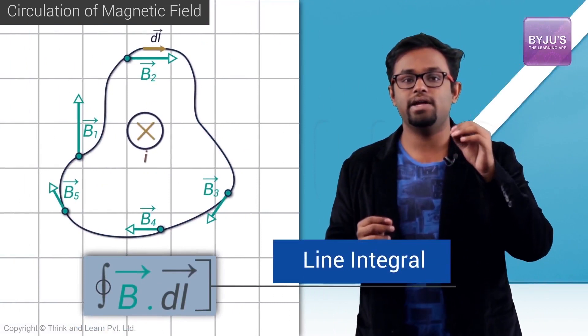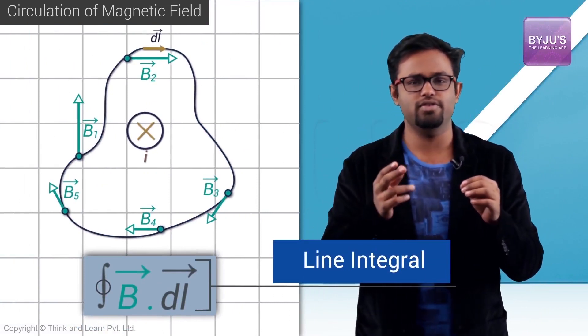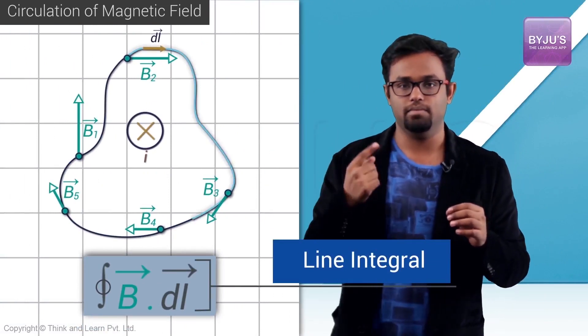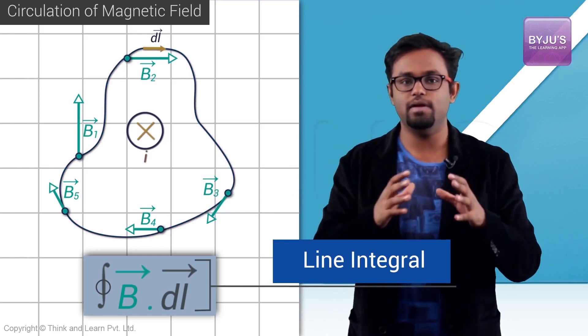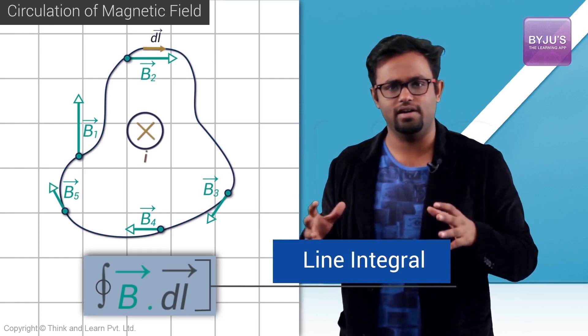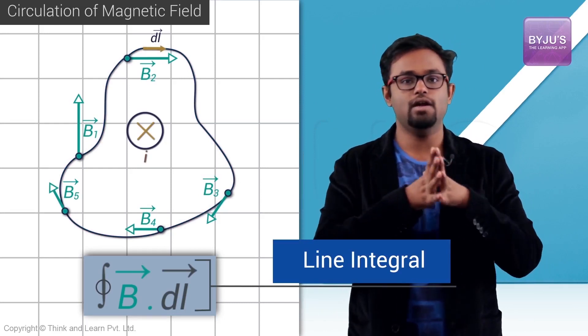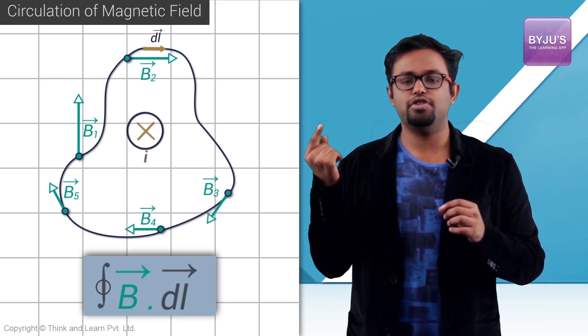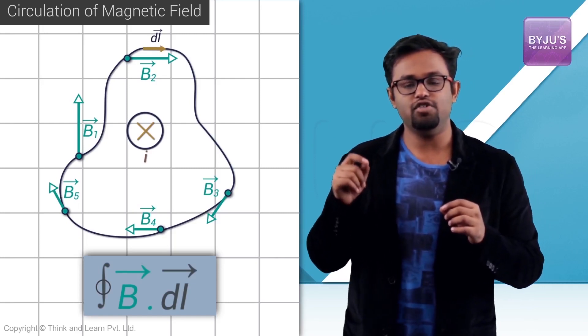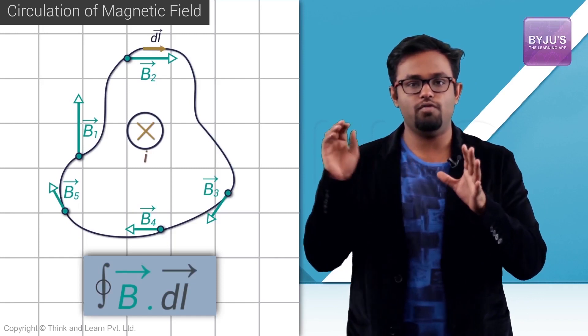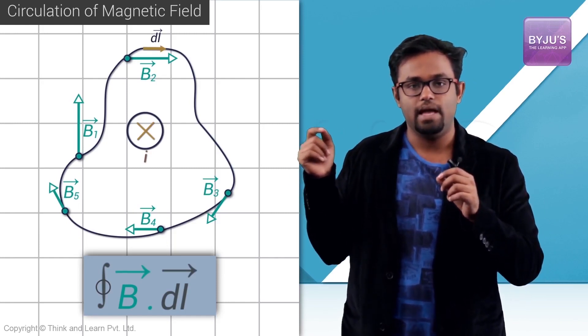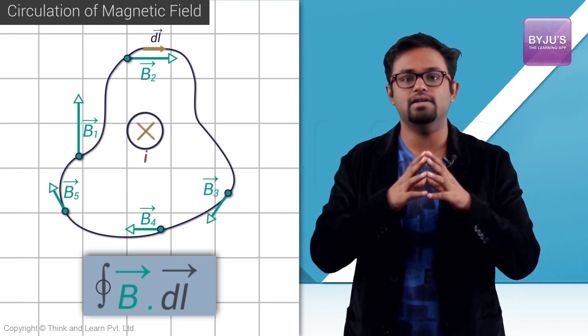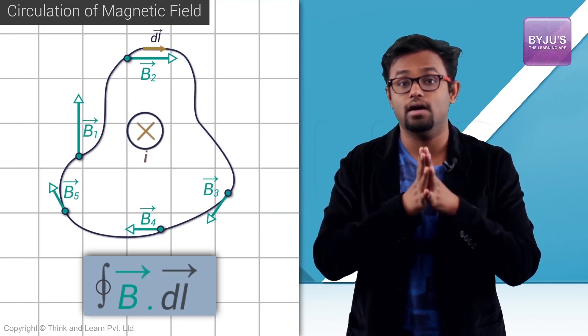This is a line integral — you will learn about it later, perhaps in engineering. A line integral is where you integrate a vector over a curve. 'Line' doesn't necessarily mean a straight line; it means a curve, so technically it should be called a curve integral. B·dL gives you the projection of B in the direction of dL multiplied by dL. Integrating that gives you the sum of the tangential component of magnetic field multiplied by the length element — that is the circulation of magnetic field.